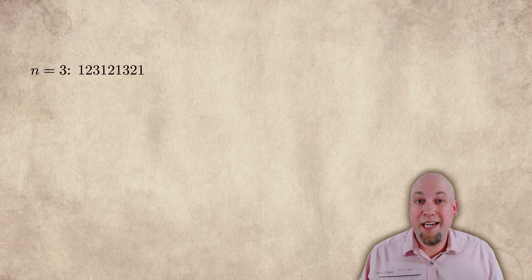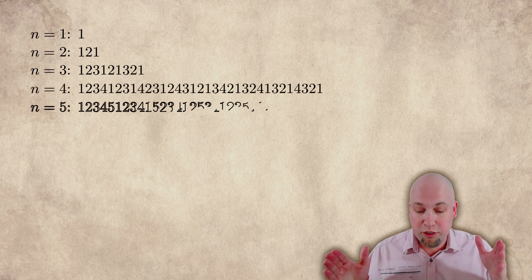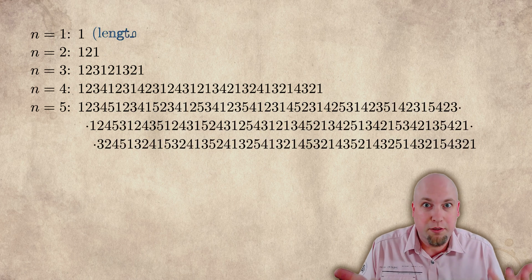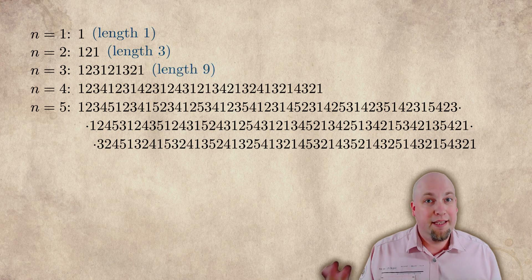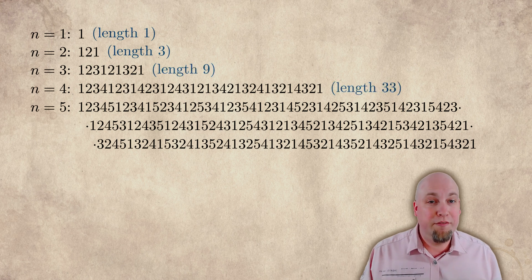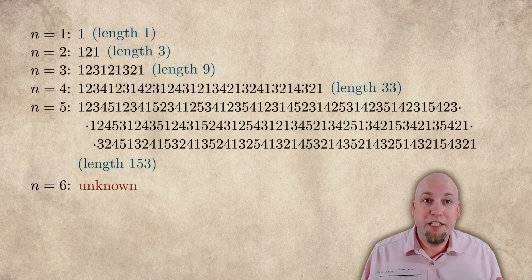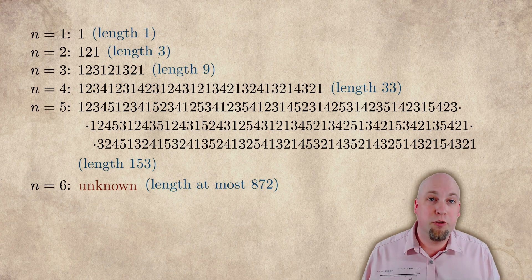Super permutations are tough. We don't know what the length of the shortest one is in general. We know the shortest length when n is less than or equal to 5. On one symbol it has length 1, sort of trivially. On two symbols it has length 3, then length 9, then 33, then 153. But when we have 6 symbols, the shortest super permutation we know of has 872 characters, and we don't know if there's a shorter one or not.